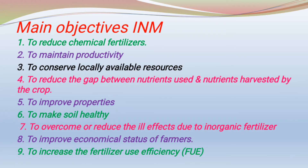Another main objective is to improve physical, chemical, and biological properties of soil. Physical properties include texture, structure, porosity, soil surface area, and colloids. Chemical properties include pH and other nutrients. Biological properties include improved microbial activity in soil and improved humus content in soil.